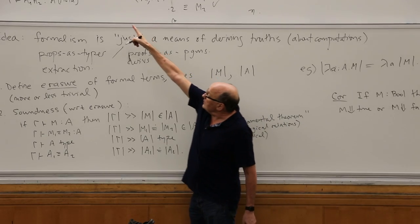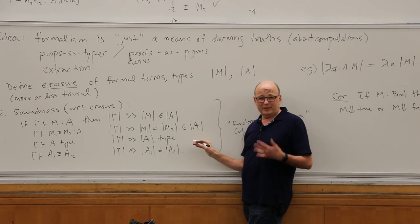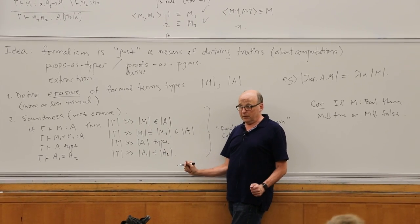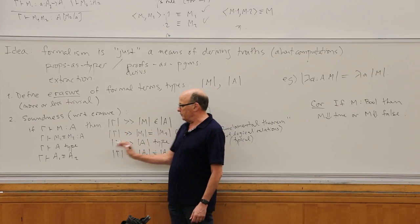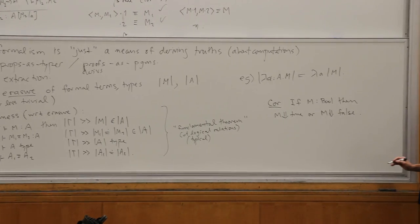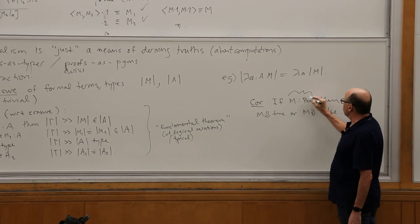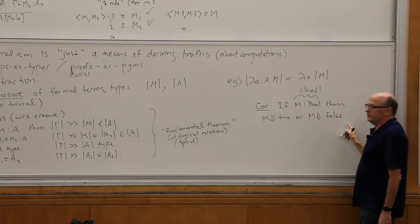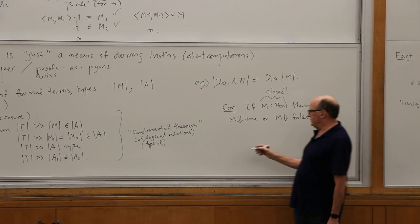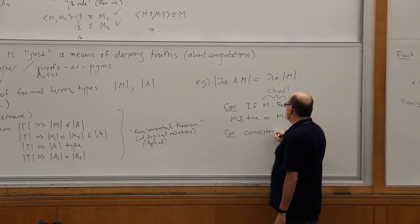I had in mind going by induction on the derivations and proving this theorem, so I proved all the right lemmas. The principle is: with all the time in the world, I would have proved all the right lemmas, and then this would be plain. So if I have a closed term — the emphasis is that gamma is missing, so this is closed — then it must evaluate to true or false.